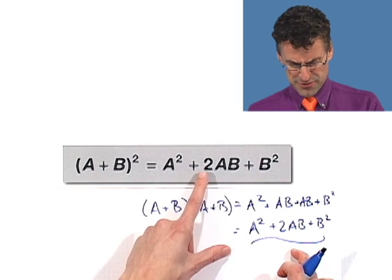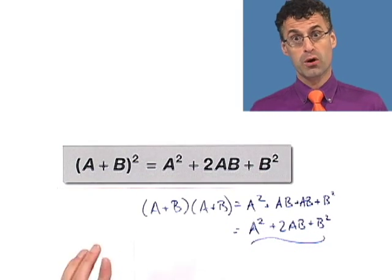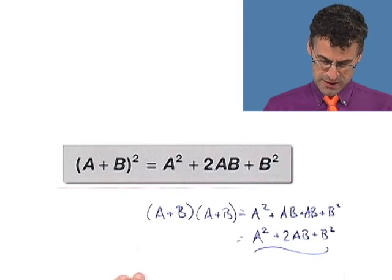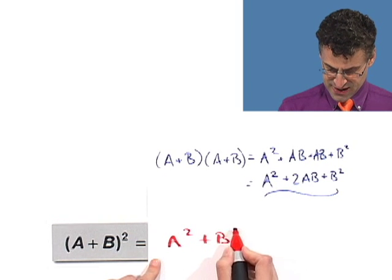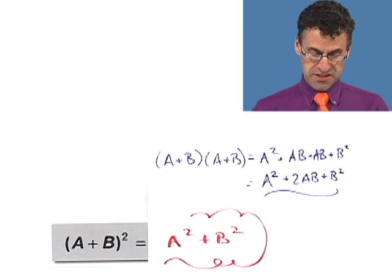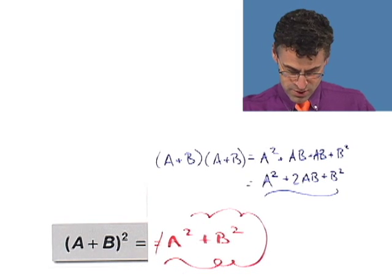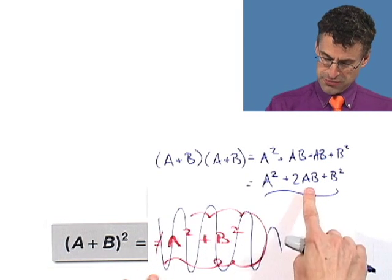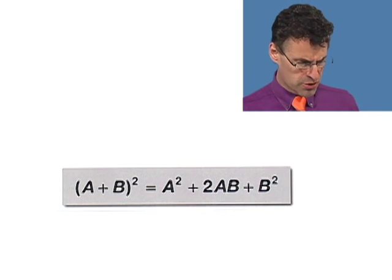If you ever get stuck, do it the Ed Berger way: literally just work it out and foil, but foil carefully. I want to share one of my favorite famous mistakes. Every person has done this. A lot of people will say a plus b squared equals a squared plus b squared. That is a classic algebra mistake. It could not be wronger. This is wrong. No, no, no. By doing that, you've totally forgotten that middle term. Here is the correct formula.